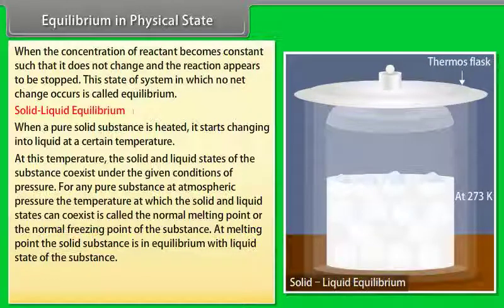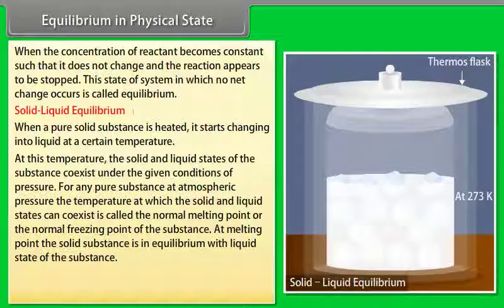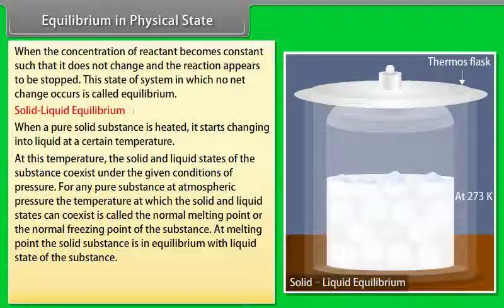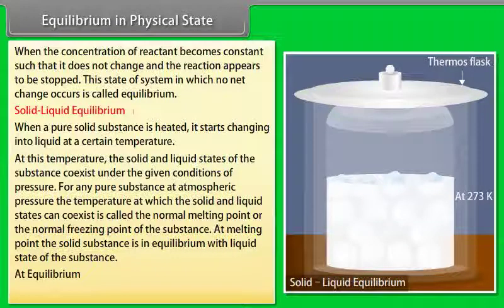At the melting point, the solid substance is in equilibrium with the liquid state. Consider ice and water at 273 Kelvin — the melting point of ice — taken in a perfectly insulated thermos flask. The temperature as well as the masses of ice and water remain constant, representing a dynamic equilibrium. The number of molecules going from ice into water equals the number going from water into ice. Thus, at equilibrium, rate of melting equals rate of freezing.